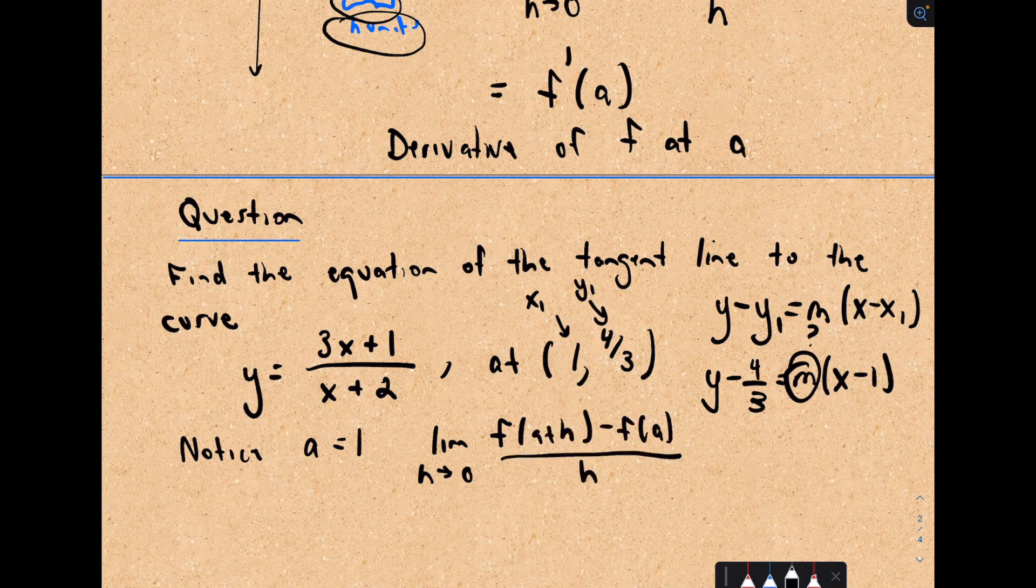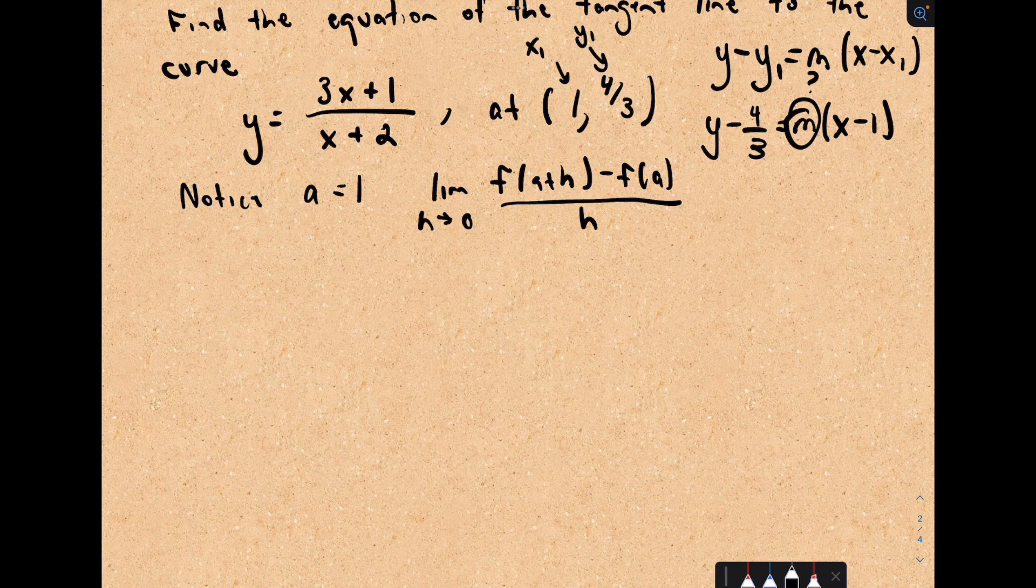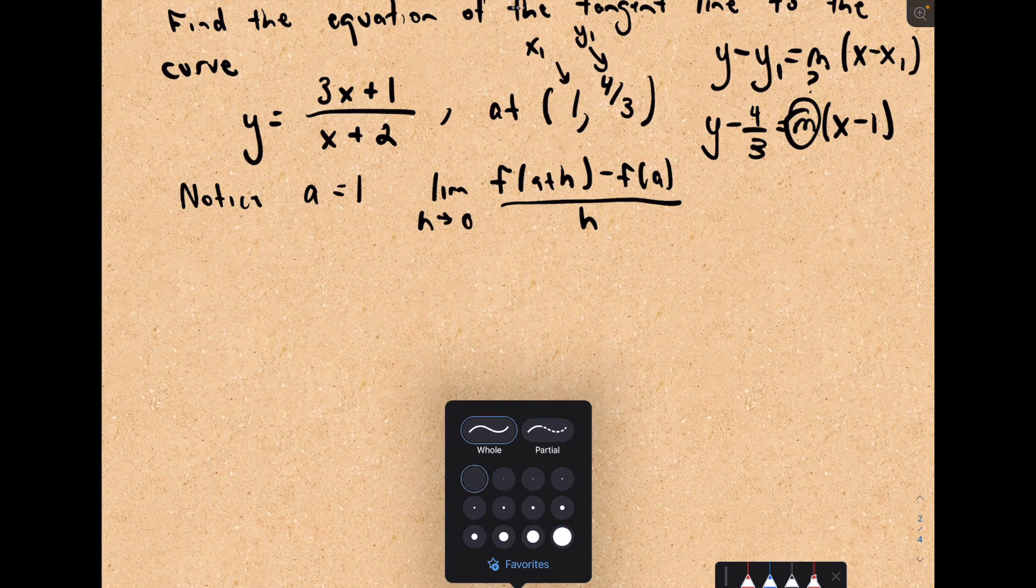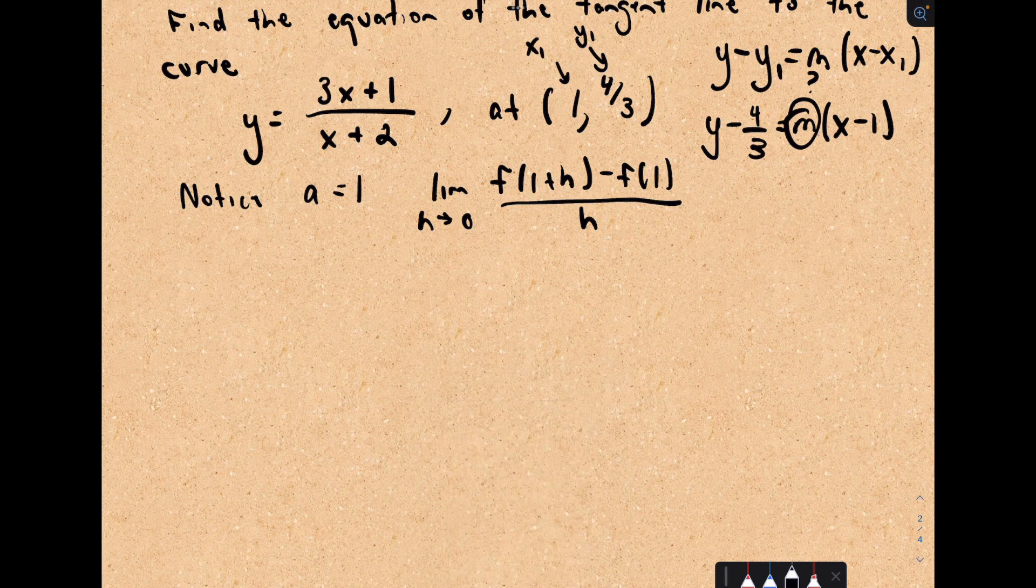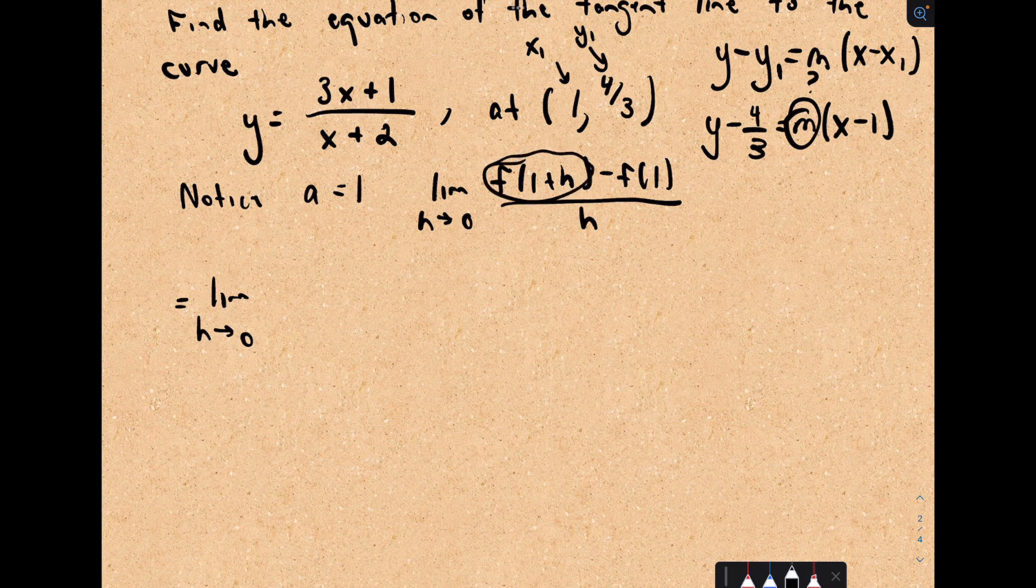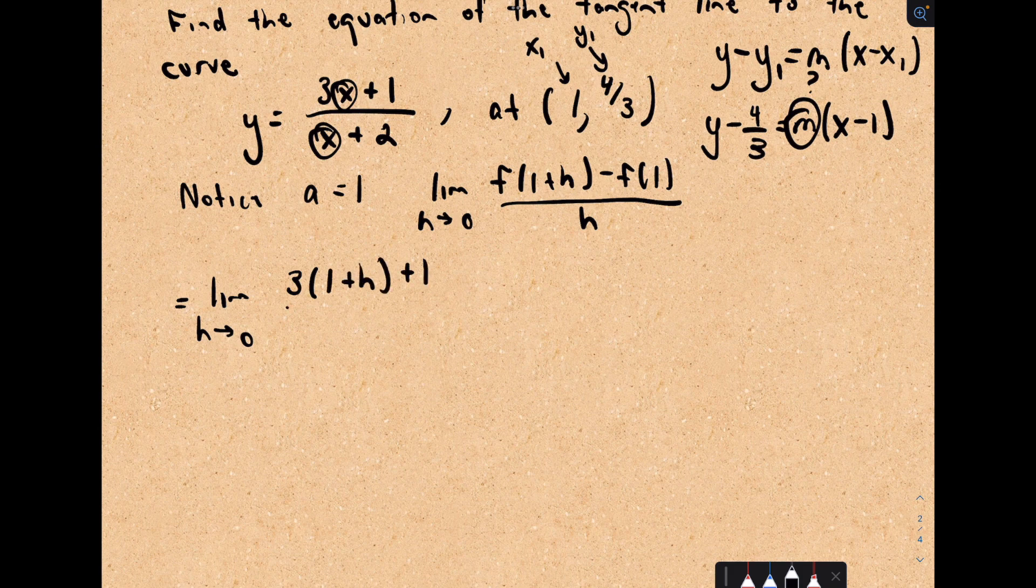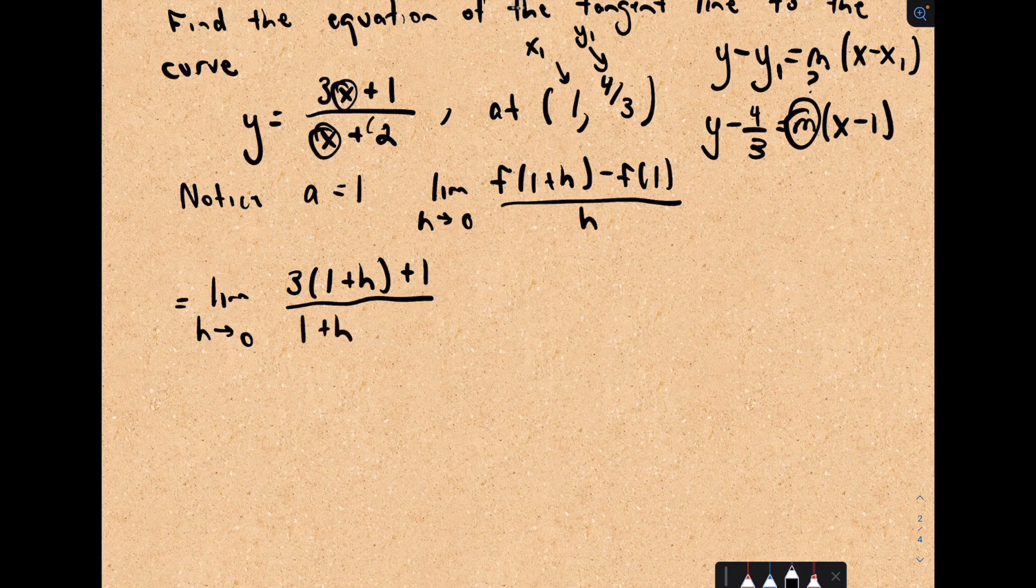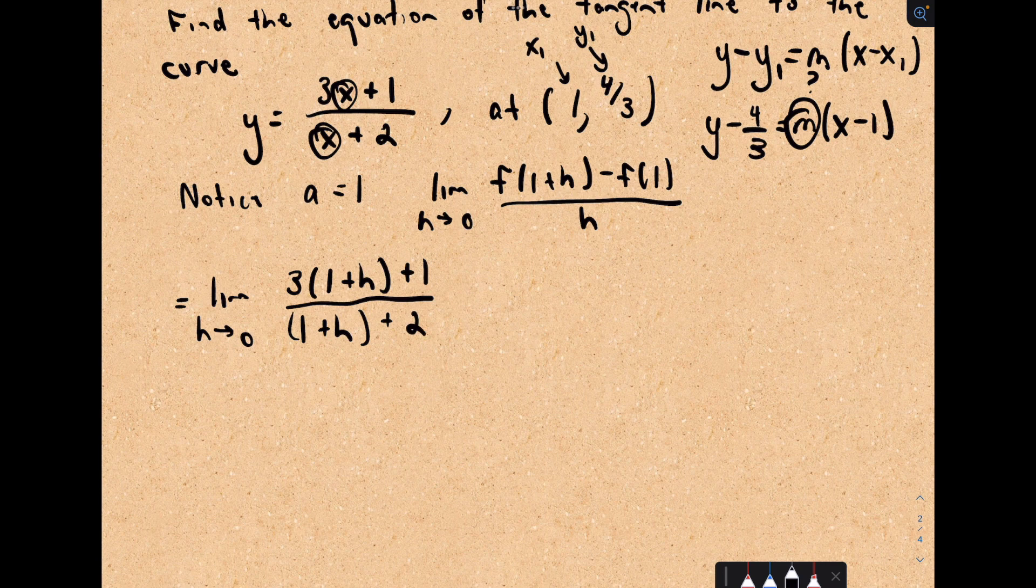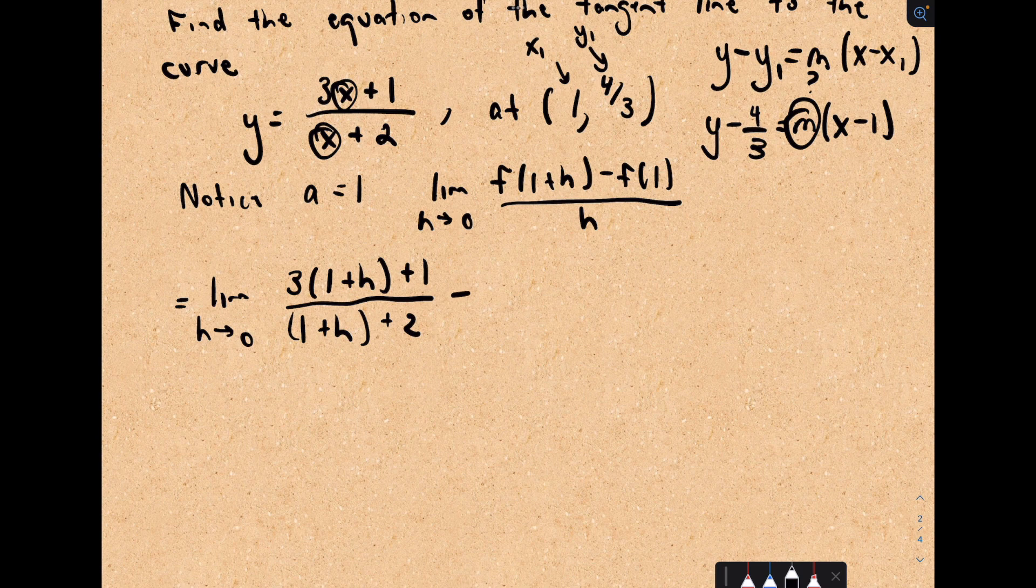So we'll take the limit as h approaches 0. We would have f of a plus h minus f of a divided by h. So let's compute this. This is going to be a little bit long just because I've got this rational function to deal with. Let's even specify again. We know what our a value is. We know that our a value is equal to 1. So the limit as h approaches 0, I'm going to find an expression for f of 1 plus h. That means everywhere there's an x, I need to plug in 1 plus h. So I would have 3 multiplied by 1 plus h plus 1 over 1 plus h plus 2.